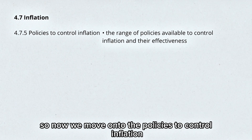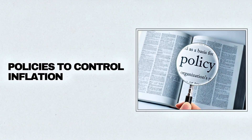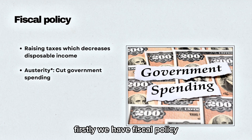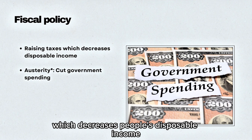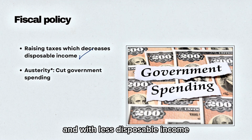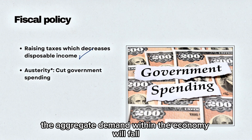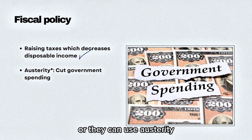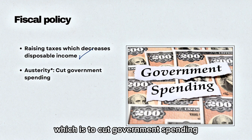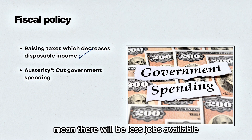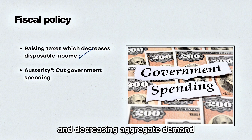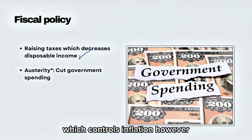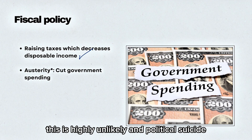Now we move on to the policies to control inflation. Using fiscal policy, the government can raise taxes, which decreases people's disposable income and causes aggregate demand to fall. Alternatively, they can use austerity — cutting government spending — which ultimately reduces available jobs, increases unemployment, decreases disposable income, and decreases aggregate demand, thereby controlling inflation. However, austerity is highly unlikely in practice and considered political suicide.